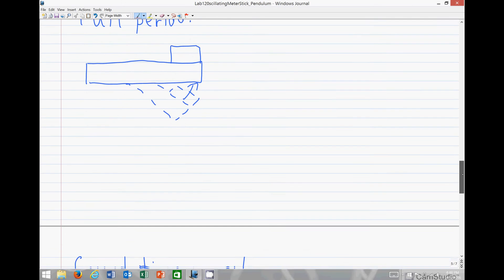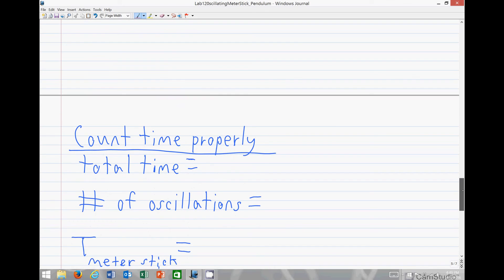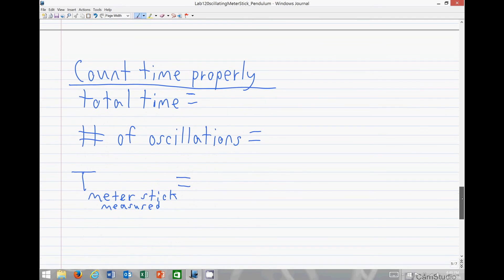It is also important that we count time properly. Typically, if we stop a stopwatch at, say, 20 seconds, and the meter stick or whatever system has undergone 20 oscillations, these numbers are completely arbitrary by the way...